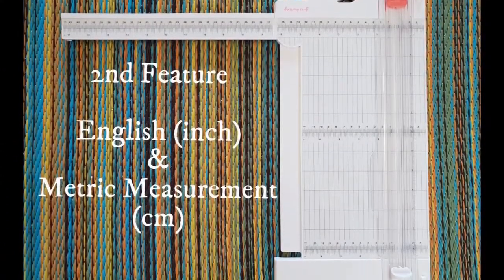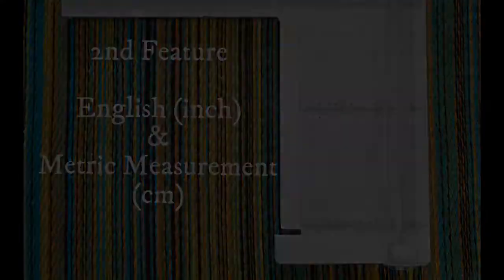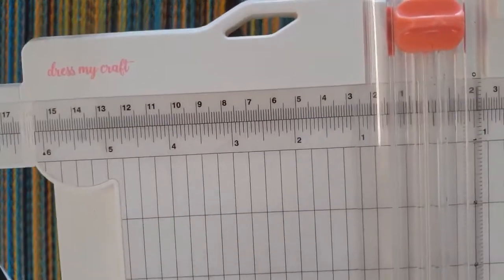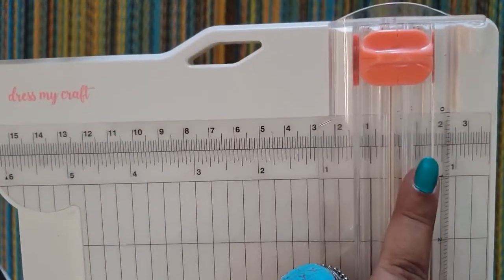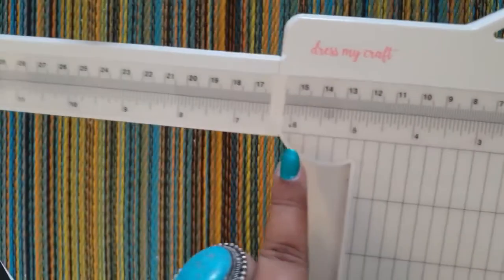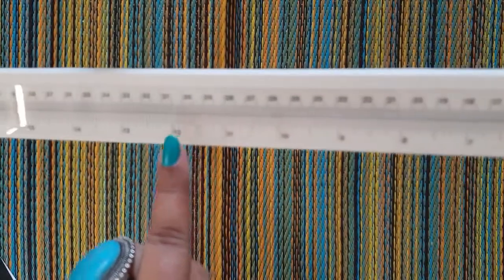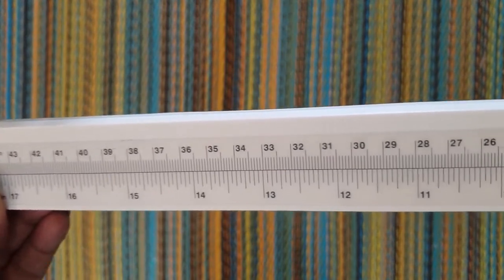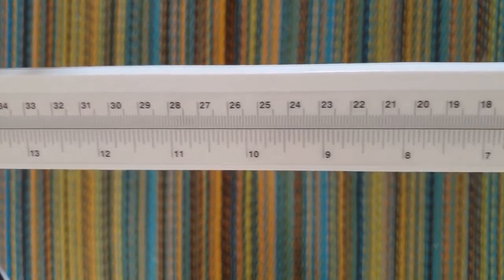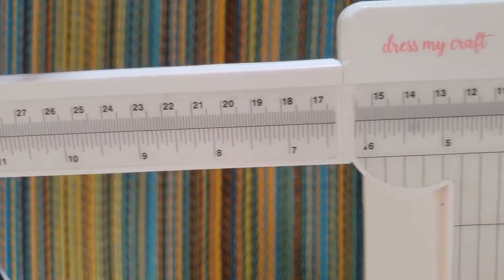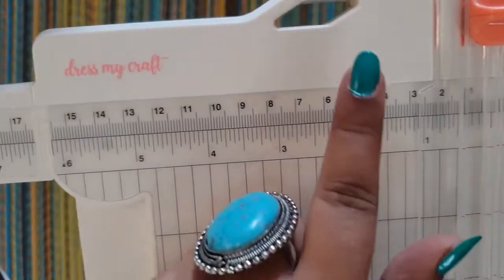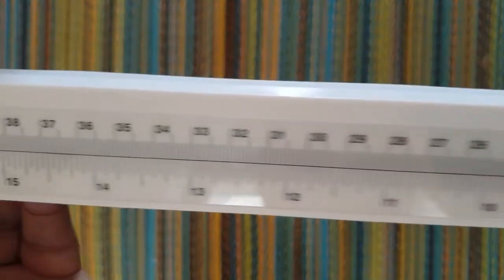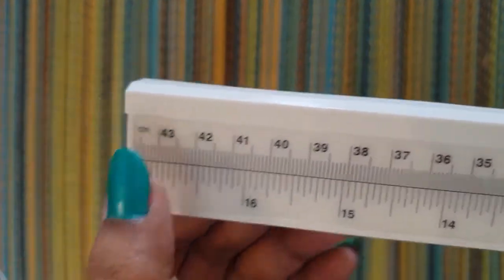This trimmer features a unique ruler for easy paper alignment. English and metric both measurements are there. Measurements are written in centimeters and inches at three different places with an extending arm up to 17 inches, which makes cutting easy and user-friendly. If you see the upper row, the reading is in centimeters, and the lower one is in inches.